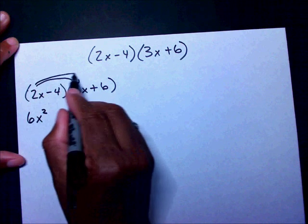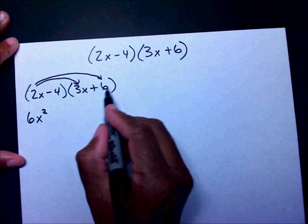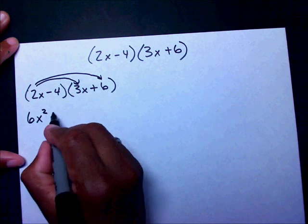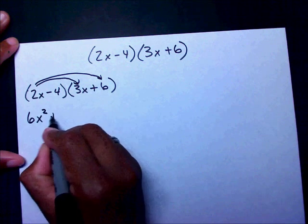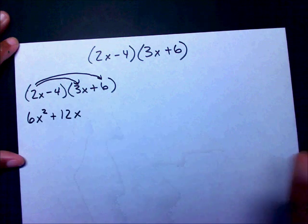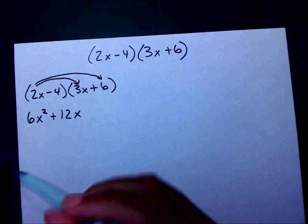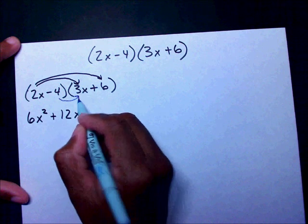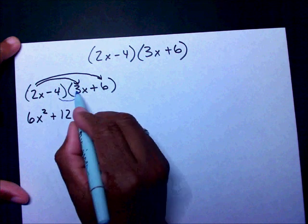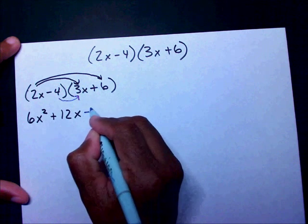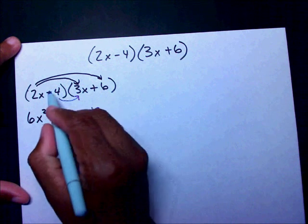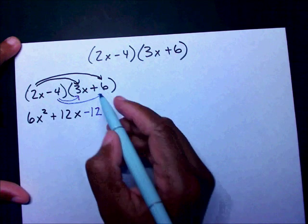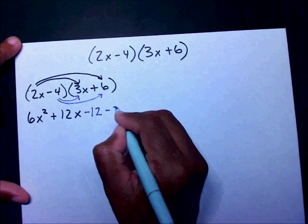I'm going to take the first term and multiply it times the second term on this polynomial. 2x times 6 is plus 12x. Then I'm going to take my second term and multiply it times the first term. Negative 4 times 3x is negative 12x, and my second term times the second term is negative 24.